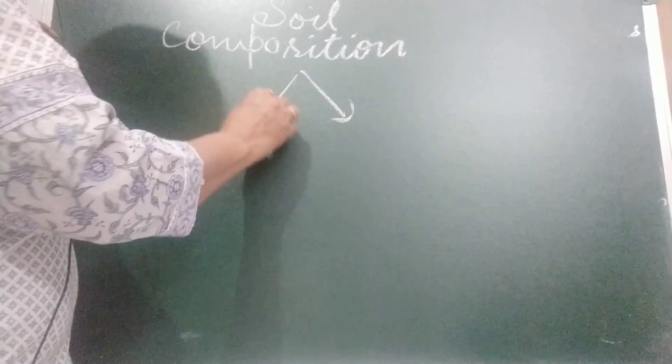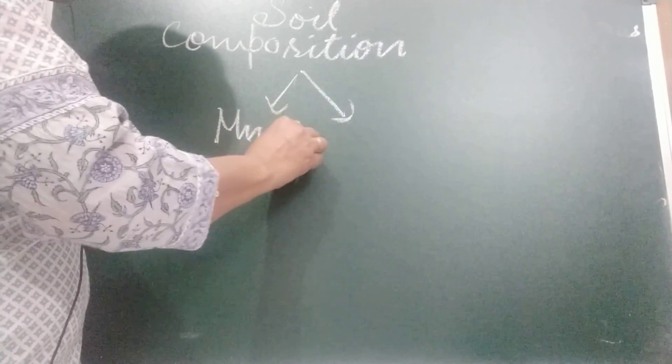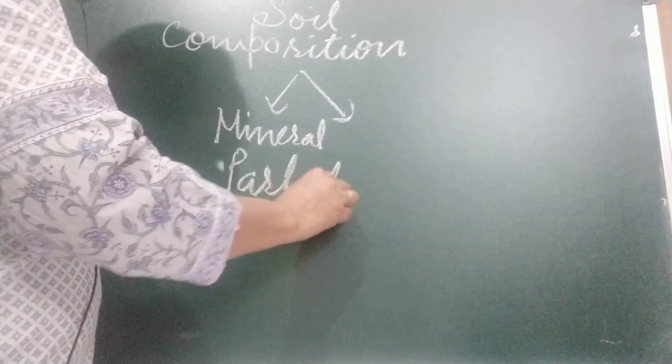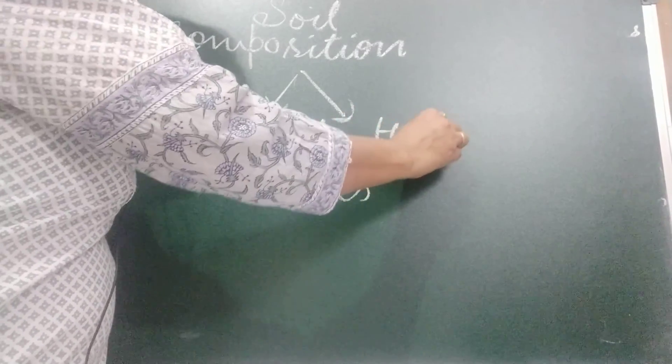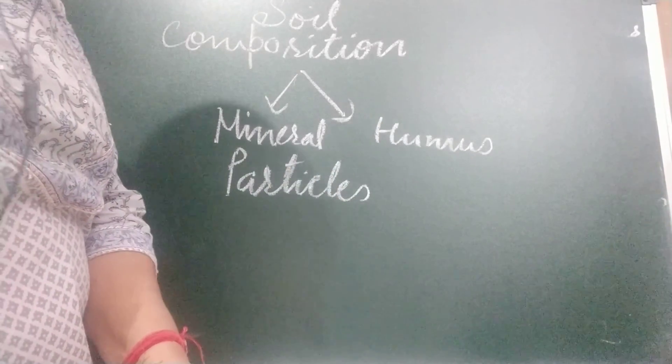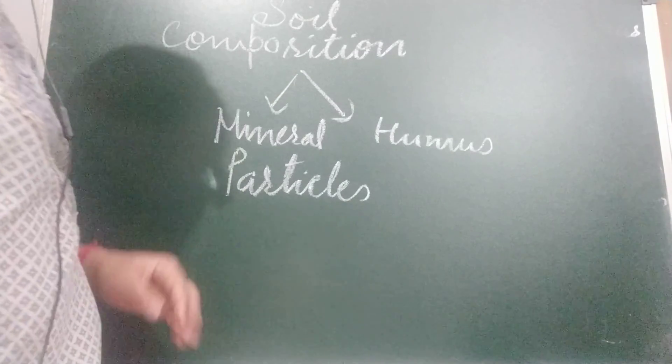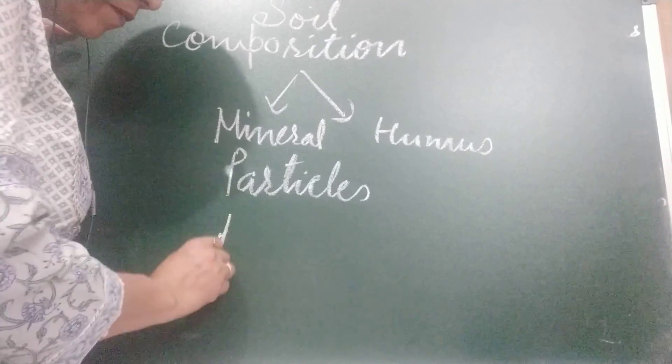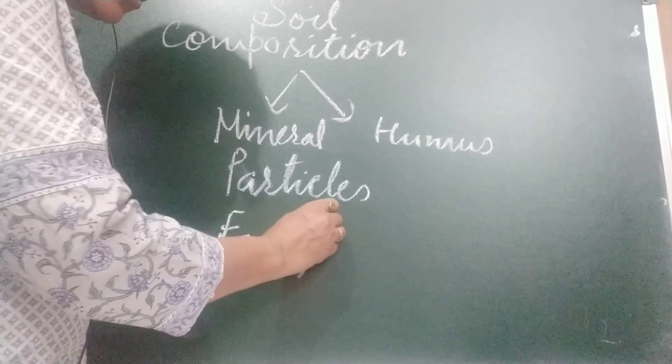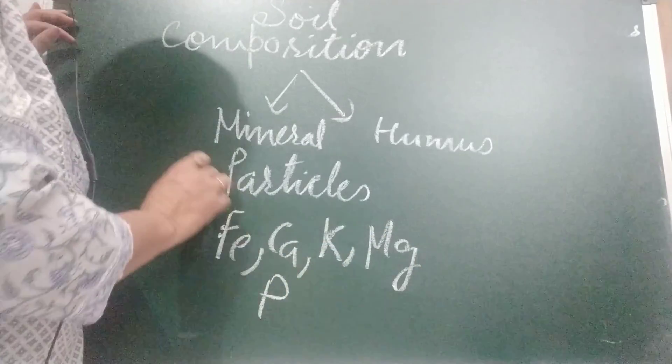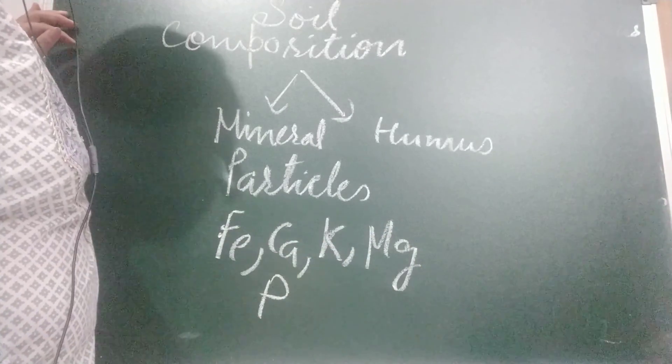So this soil is made up of two main components. First mineral particles and second minerals. Tiny bits of mineral particles which come from the larger rocks. These minerals include salts of iron, calcium, potassium, magnesium, phosphorus etc. So these minerals they come from the rocks.